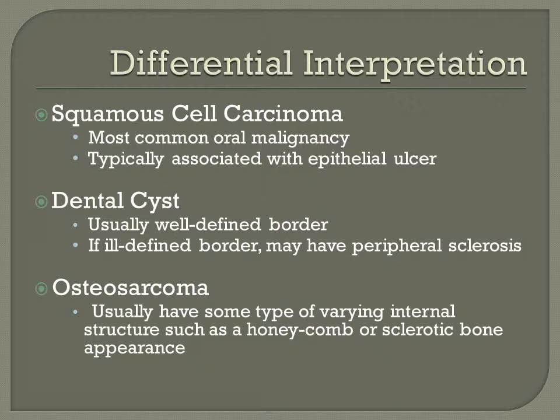The next most likely differential interpretation is a dental cyst. Dental cysts occur commonly within bone and have totally radiolucent internal structures. Dental cysts can usually be differentiated from fibrosarcomas by a well-defined border. However, some cysts associated with chronic duration or secondary infection have a less definable border. In these cases, some peripheral sclerosis in adjacent bone is usually seen and potentially differentiates this lesion from fibrosarcoma.